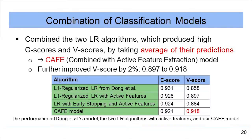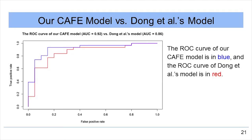Our third innovative optimization technique was the combination of multiple algorithms. We combined our two logistic regression algorithms, which had high V-scores, developing our CAFE model — combination of algorithms with active feature extraction — by taking the average of their predictions. This combination further improved the V-score by 2%, from 0.897 to 0.918. As shown in the figure, for the same false positive rate our CAFE model achieves a higher true positive rate than Dong et al.'s model, indicating its robustness and high accuracy.